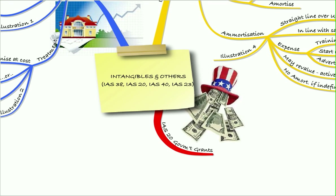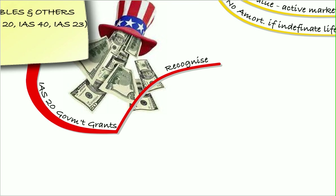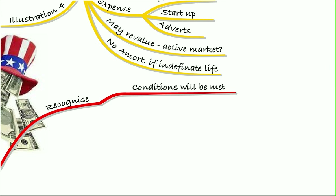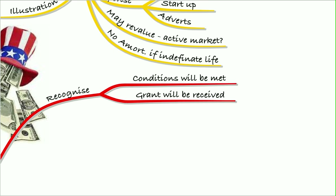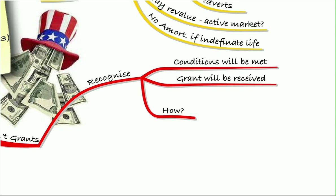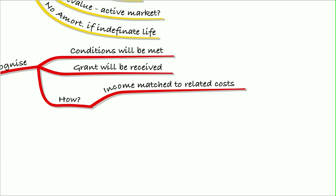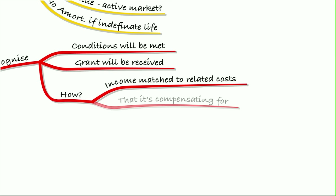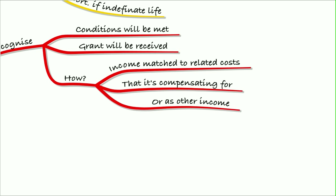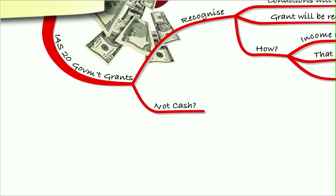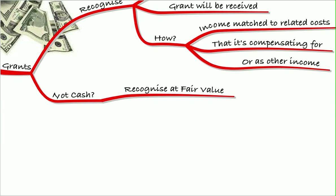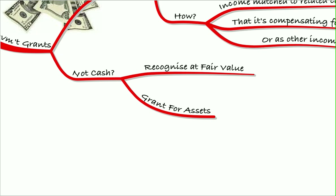We then moved on to IAS 20, which was government grants. This is where the government is giving us a grant, either for an expense we have or for an asset. We recognize it when conditions will be met and the grant will be received. For an income grant — a grant against an expense — we match that income to the related cost. Alternatively, we could treat it as other income. If it's not cash, we recognize it at fair value.